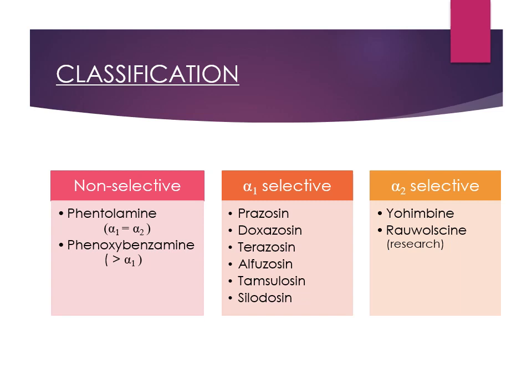Now let's look at classification. We classify alpha blockers as non-selective, alpha 1 selective, and alpha 2 selective. Non-selective blocks both alpha 1 and alpha 2. Alpha 1 selective has more blockade for alpha 1 as compared to alpha 2, and alpha 2 selective is more for alpha 2. The two non-selective drugs are phentolamine and phenoxybenzamine. Phentolamine has equal selectivity for alpha 1 and alpha 2, and is a reversible blocker. Phenoxybenzamine is more for alpha 1 and alpha 2, and is an irreversible blocker.